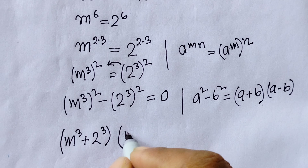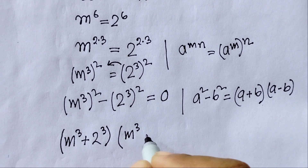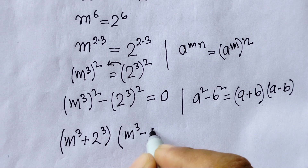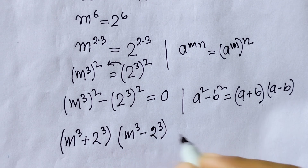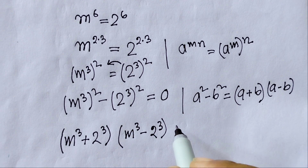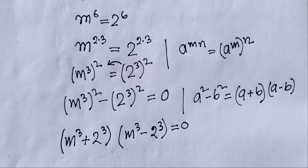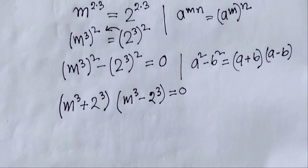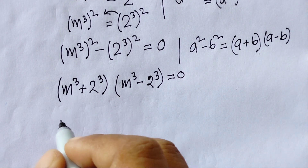From the first case we easily get m equals 2. For the second case we have the quadratic equation m squared plus 2m plus 4 equals zero, which we solve using the quadratic formula.